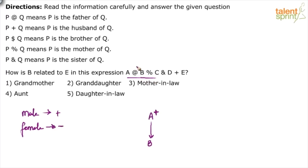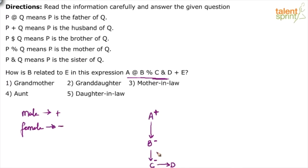C & D means C is the sister of D — sisters belong to the same generation, so C and D go in the same row. C is female. D's gender is not yet known. D + E means D is the husband of E — so D is male and E is female. We represent married couples with a double-headed arrow. Now to find how B is related to E: C and D are siblings, so B is the mother of D as well. D is E's husband, so B is D's mother, meaning B is the mother-in-law of E.